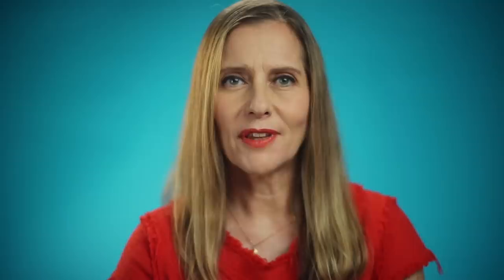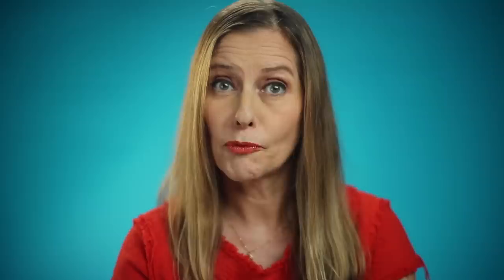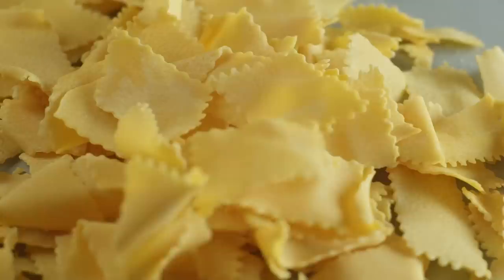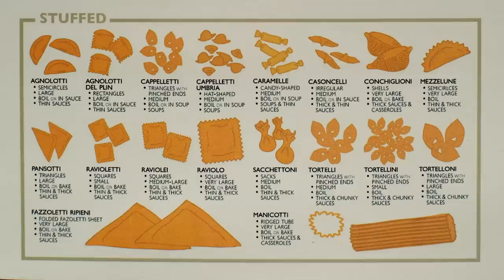Whenever you design an object of any kind, you think of how you want it to perform. So think about the same for pasta. Do you want it to be ribbed or do you want it to be smooth? The ribbed ones absorb the sauce better. Do you want them to be round or do you want them to be square? They have a different feel on the palate. Everything is for a reason.